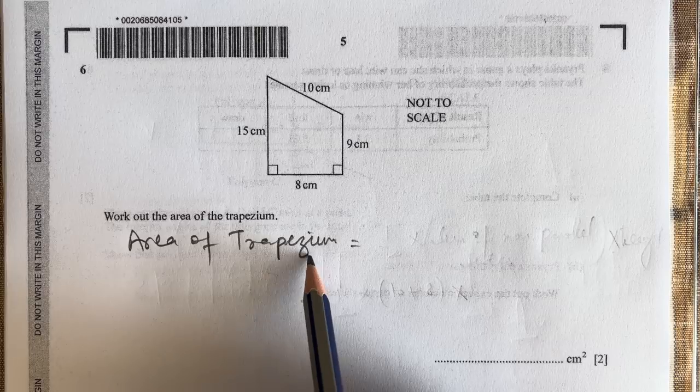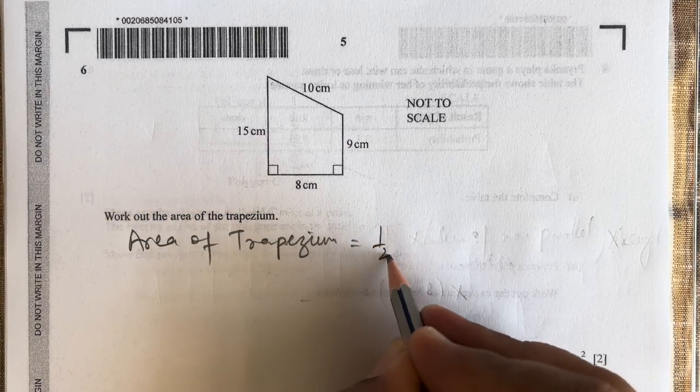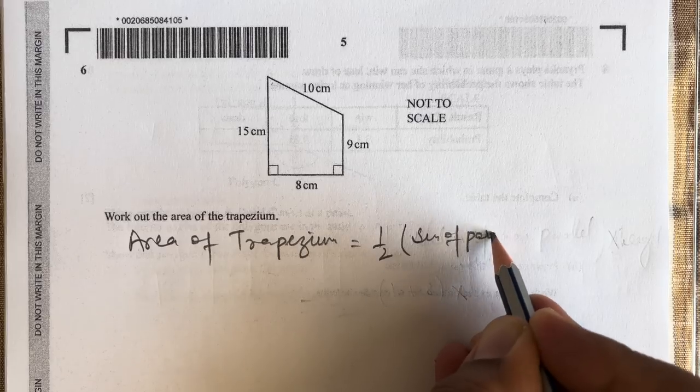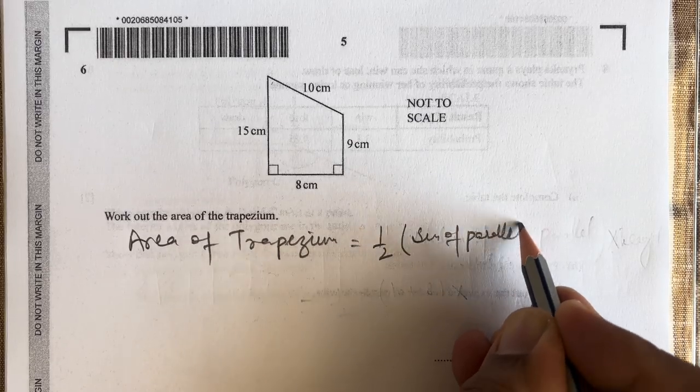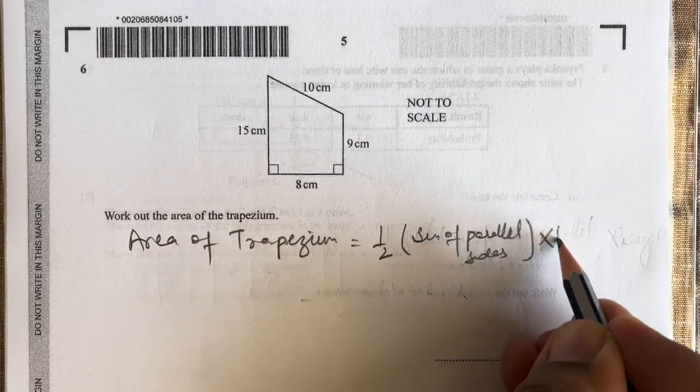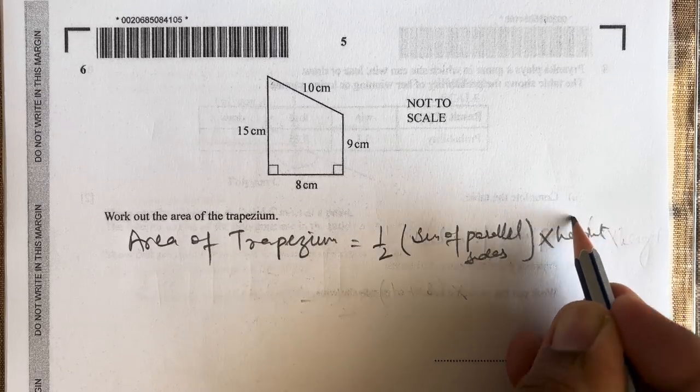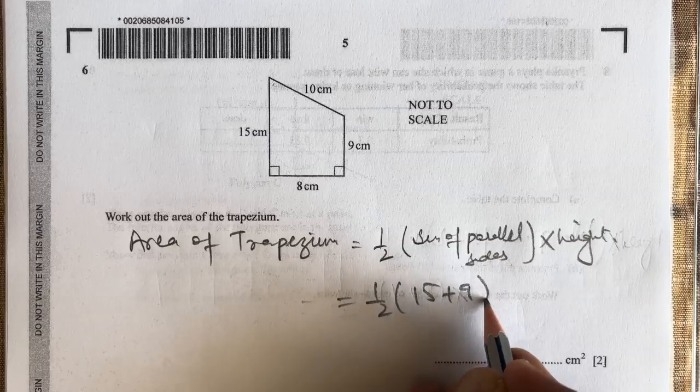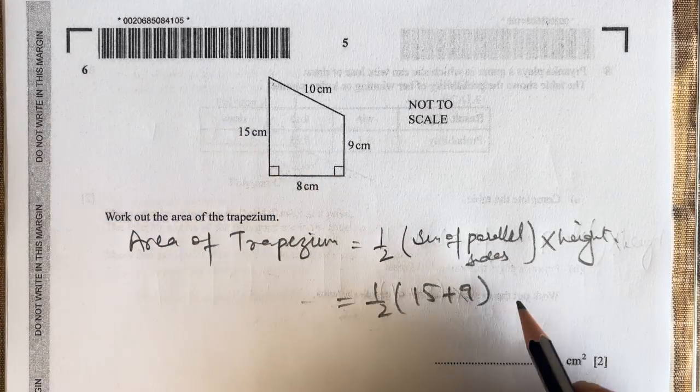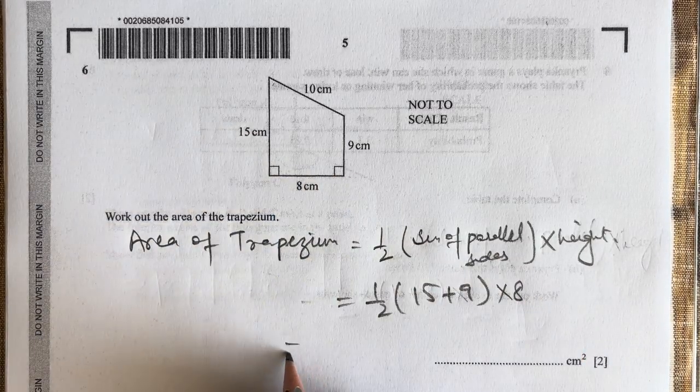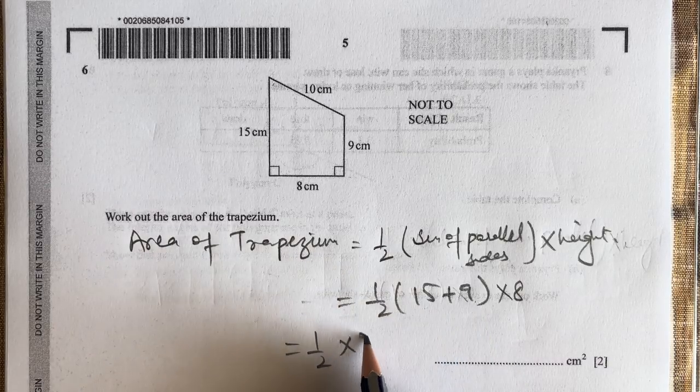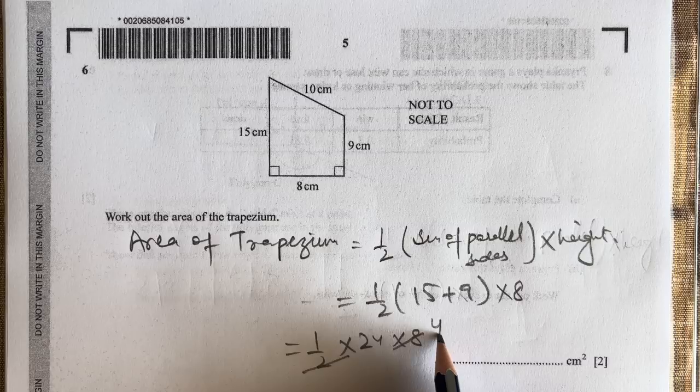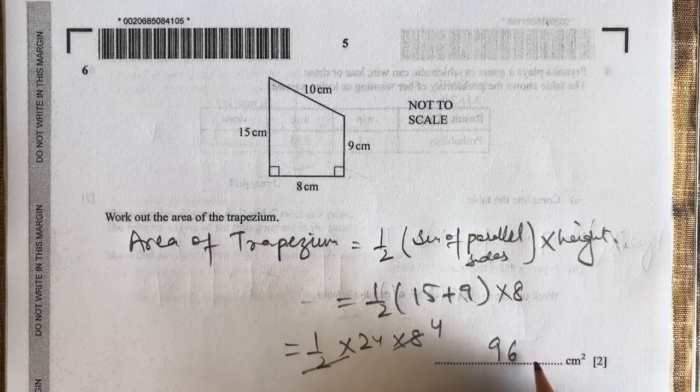The area of a trapezium is given by ½ × (sum of parallel sides) × height. This will be ½ × (15 + 9) × 8 = ½ × 24 × 8 = 12 × 8 = 96. So we get 96 as our answer.